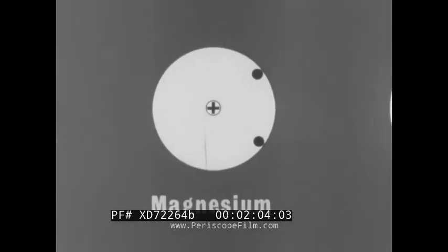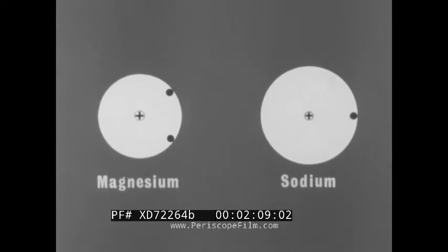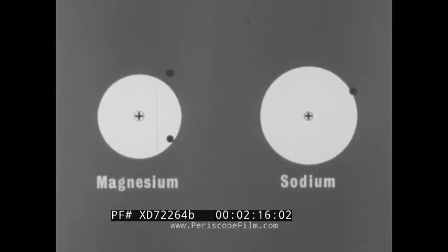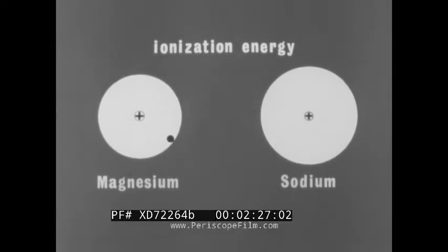This holds the electrons closer than in a sodium atom, making the magnesium atom the smaller of the two, and making the force that holds its outer electrons greater than the force in a sodium atom. We think of this force in terms of the energy required to overcome it in order to pull a single electron from an atom. This energy is called the ionization energy or potential. The ionization energy determines the tendency of an atom to lose electrons.